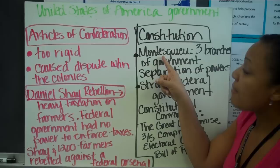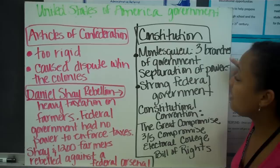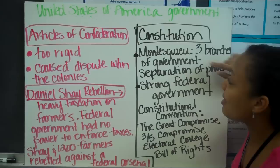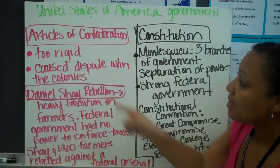The Constitution is going to draw on Enlightenment philosopher Montesquieu. He said there should be three branches of government, and those three branches should be separate with individual powers. This is where we get the legislative, executive, and judicial branches of government — because of Montesquieu.